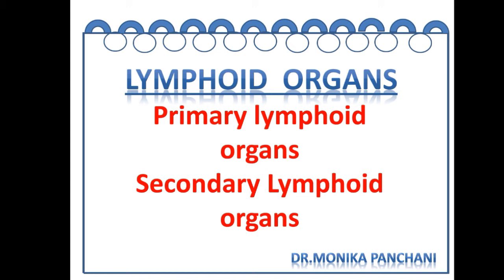Dear students, you are well aware of the different terms in immunology such as immunity, immune system, and lymphoid organs. This unit is about the lymphoid organs, and these are of two kinds: primary lymphoid organs and secondary lymphoid organs. I am going to cover these two parts in this lecture.